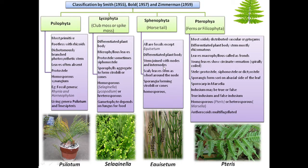In Sphenophyta, leaves are scaly at the nodes, and sporangia form strobili or cones. It is homosporous. Pterophyta is the most widely distributed vascular cryptogam. The plant body is differentiated, mostly rhizomatous, and leaves are macrophyllous — called ferns. Young leaves show circinate venation, meaning spirally coiled over the stem.